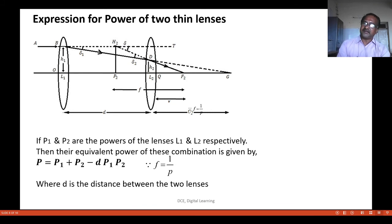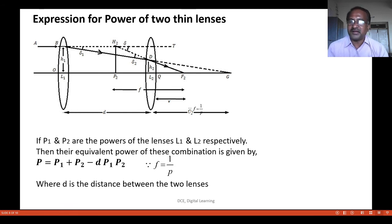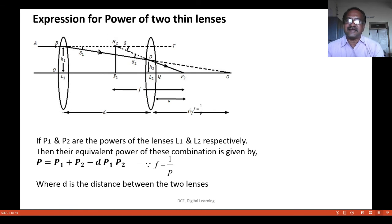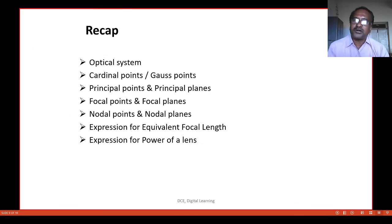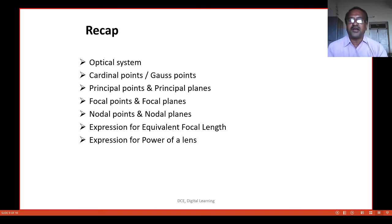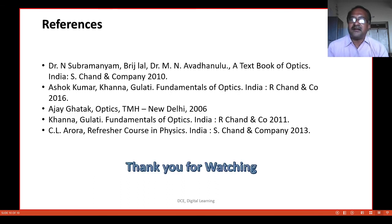The expression for power of the thin lens is quite simple. Since P equals 1/F, the same equation is rewritten in terms of power: P is equal to P1 plus P2 minus D into P1P2, where D is the distance between the lenses. In this session we have studied: optical system, cardinal points, principal points, focal points, nodal points, expression for equivalent focal length, and expression for power of the lenses. These are the references referred in this content. Thank you for watching.